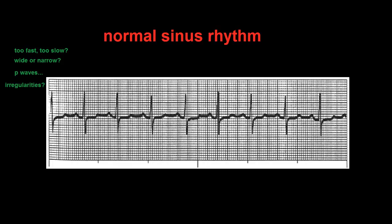We will be looking at a normal sinus rhythm and using our four-step method to analyze it and determine that it actually is a normal sinus rhythm. Step number one is right up here in the upper left-hand corner. We're going to check and see if the rhythm is too fast or too slow. That means we'll be looking at the QRS's, specifically how far apart each one is.